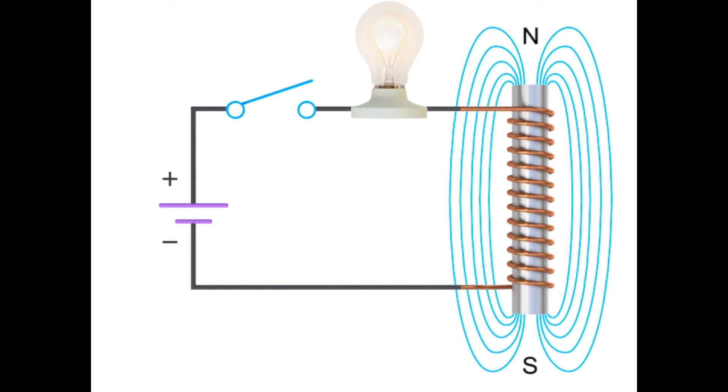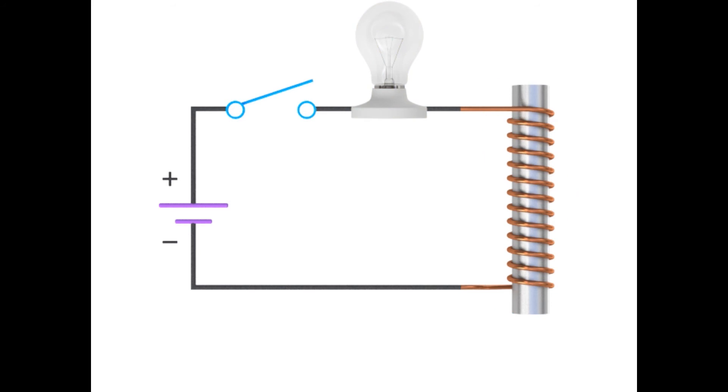If you open the switch and stop the flow of current from the source, the electromagnetic field will diminish rapidly and simultaneously release stored energy in the form of voltage. It will actually generate enough voltage to cause a spark across the switch as it opens.